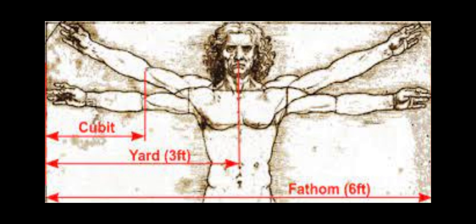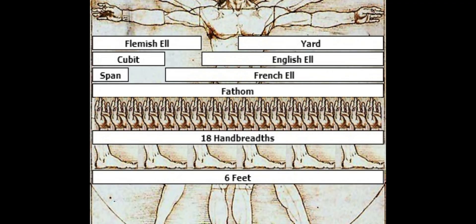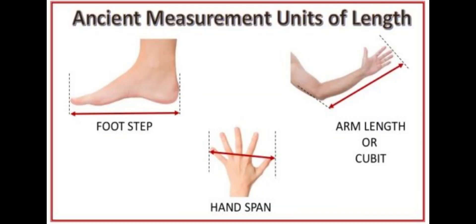One of the very first things that people used for measuring were their body parts, such as the foot, hands, fingers, and hand span.